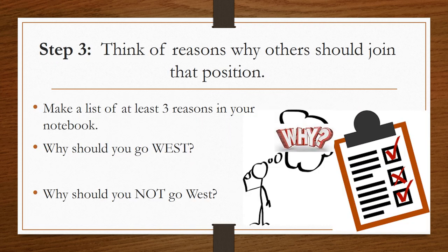Step three is to think of reasons why others should join that position. We want you to make a list of at least three reasons in your notebook — why should you go west, or why should you not go west? Our expectation is that there be three thoughtful, meaningful reasons written in your history notebook that show you support one position or the other.